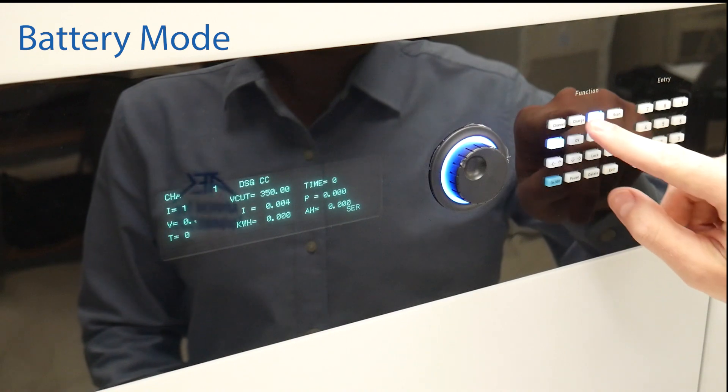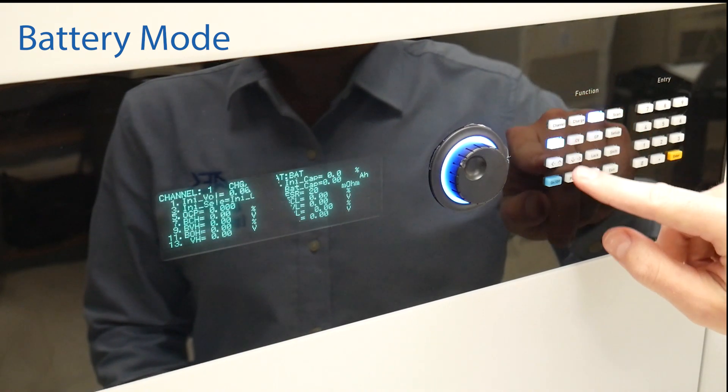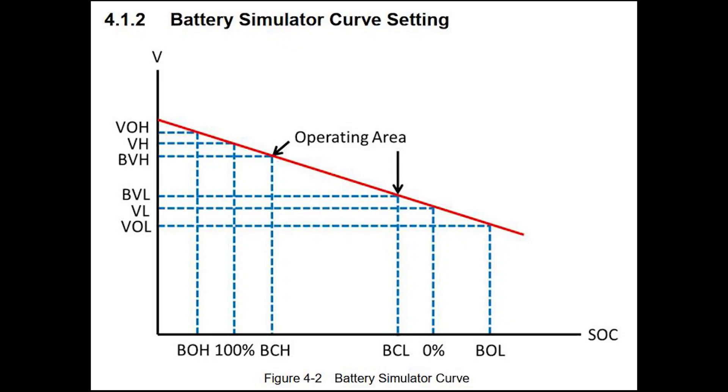Now for battery emulation mode we enter shift plus charge. Here we enter a multitude of settings to characterize our battery profile as seen in this image. This can be referenced in the manual in section 4-4.